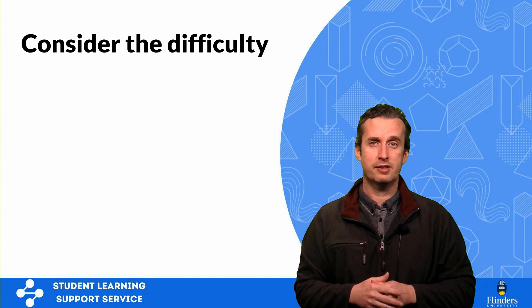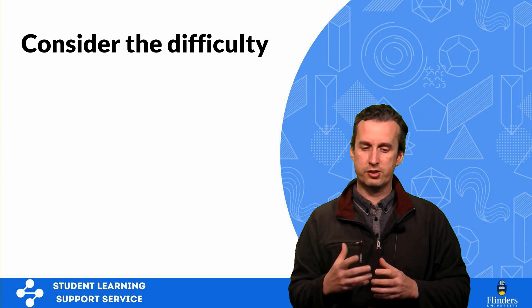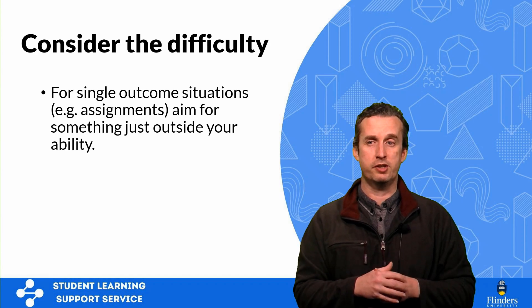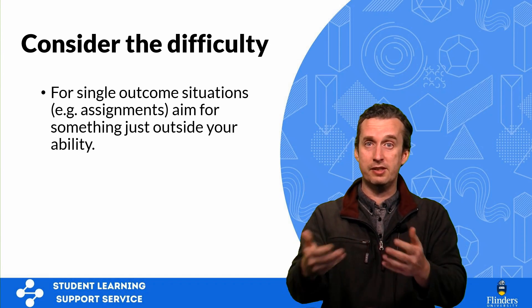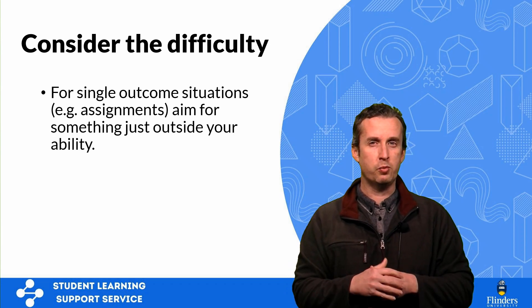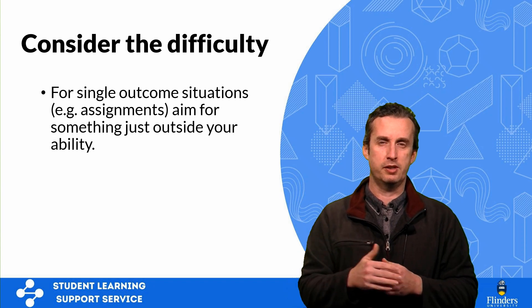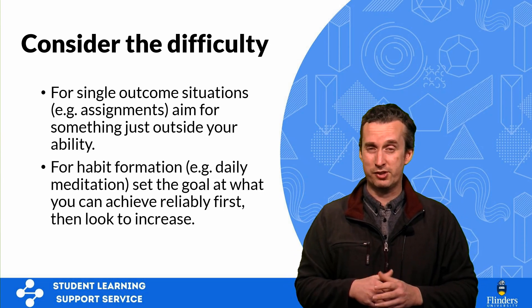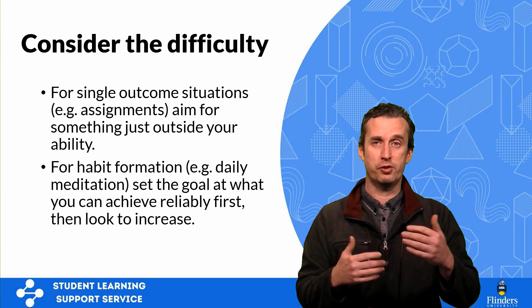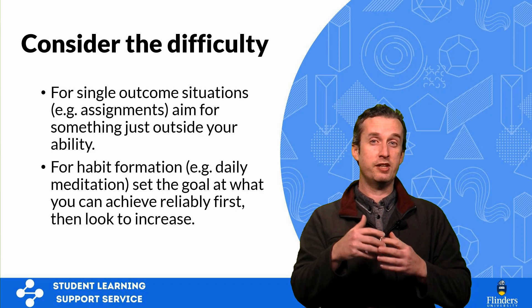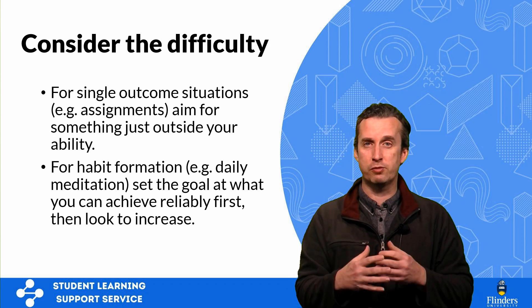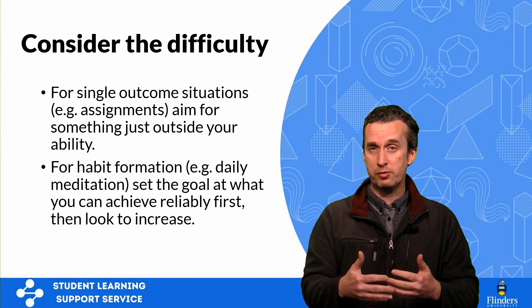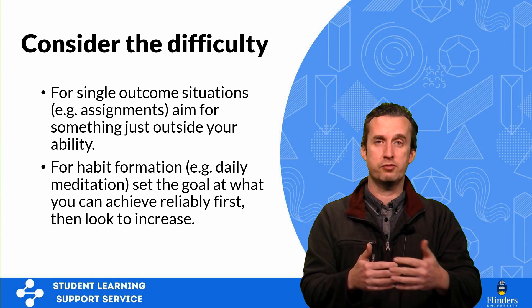Characteristic five is that the difficulty of the goal should be matched to the context. If we're talking about a single outcome situation — like handing in an assignment, where once it's submitted the activity is finished — you want to aim for something just outside your current ability. If you normally get credits, aim for a distinction on the next one. But if we're talking about habit formation, where you want to perform the same behaviour regularly — like daily meditation — set your initial goal at a level you can achieve reliably first, such as five or ten minutes a day. Get the habit formed first, then increase the amount over time.